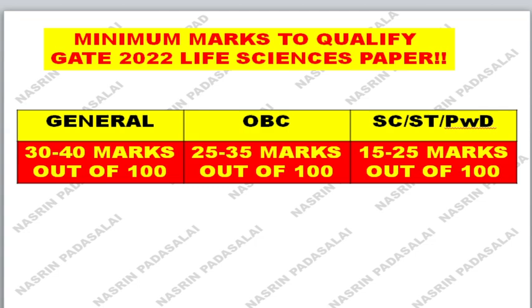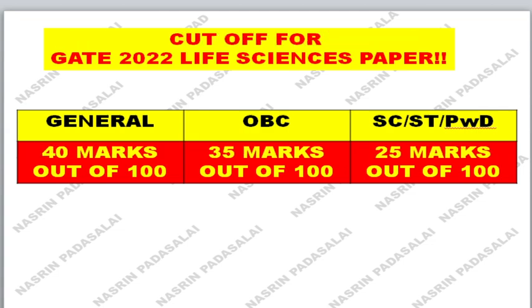Now we have the question paper in hand along with the answer key. I waited until this time point to upload this cutoff prediction, because many people upload cutoffs right after the exam and you can't really trust those. Please look at this cutoff carefully. For the General category, since the paper was very easy, I say you should get 40 marks out of 100.